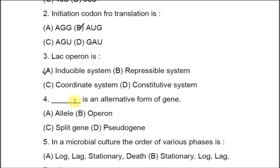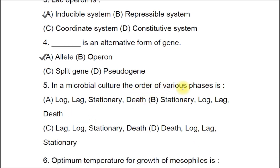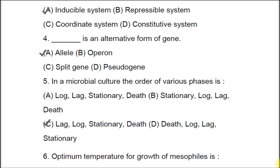Question 4: Dash is an alternative form of a gene. A) allele, B) operon, C) split gene, D) pseudogene. The correct answer is A, allele. Question 5: In a microbial culture the order of various phases is A) log, lag, stationary, death, B) stationary, log, lag. The correct option is C: lag, log, stationary, then death.